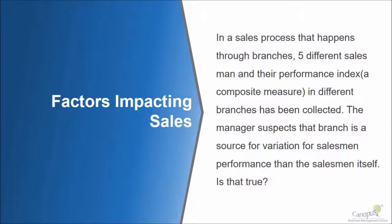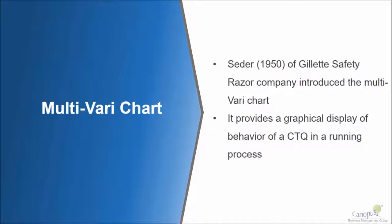Now the manager is suspecting that a branch is a source of variation — in other words, he suspects that branch as a factor is having an impact on the overall performance. So we want to nullify or validate this. For this purpose, instead of using any of the other graphical tools that we've learned, we will use a multivariate chart.